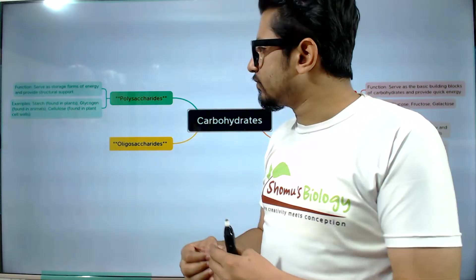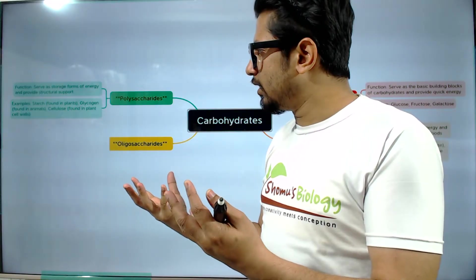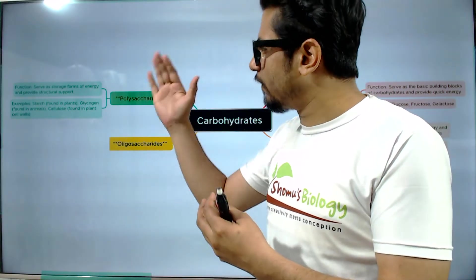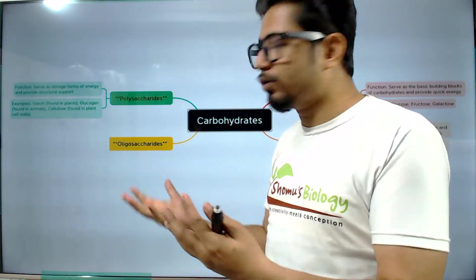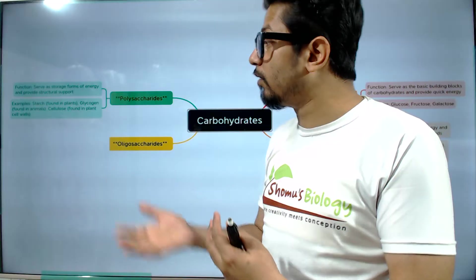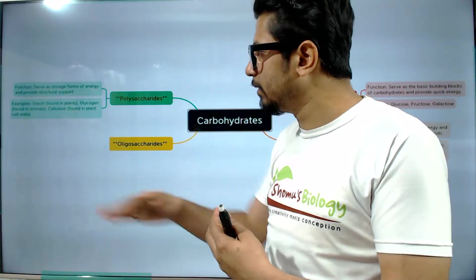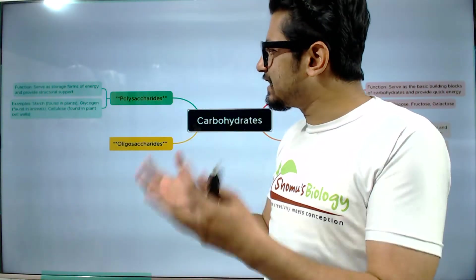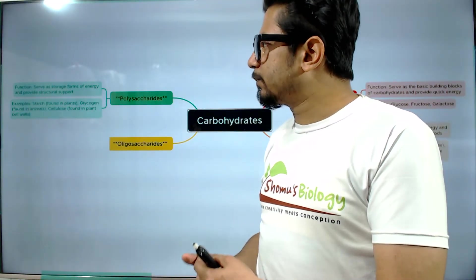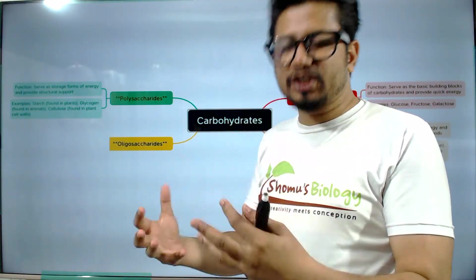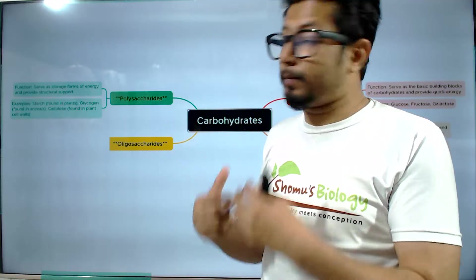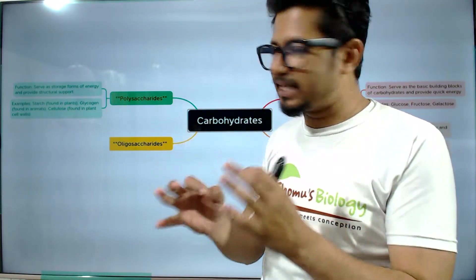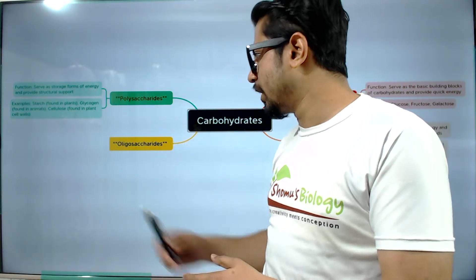Starch is a storage form of energy found in plants. Glycogen is the storage form of energy found in animals. Cellulose is an example that provides structural and mechanical support, which is found in plant cell walls.